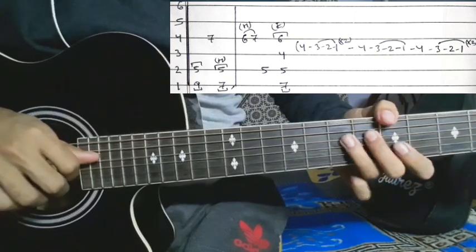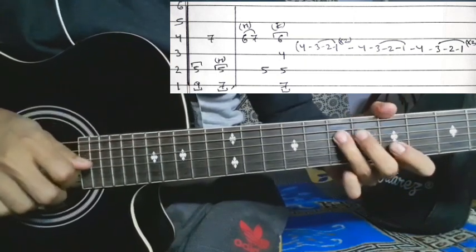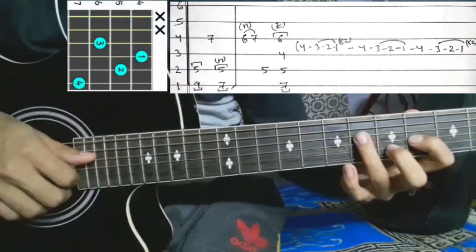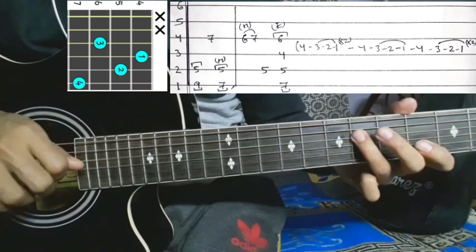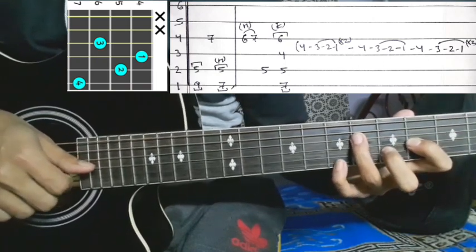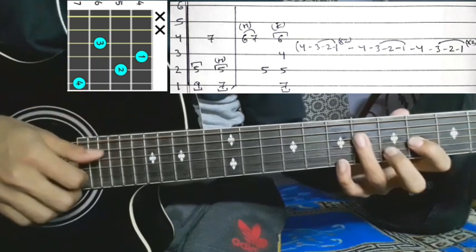Fifth section: fourth string six, same hammer-on, second string five. After that, the triad chip - fourth string six, third string four, second string five, first string seven. That's the picking pattern.